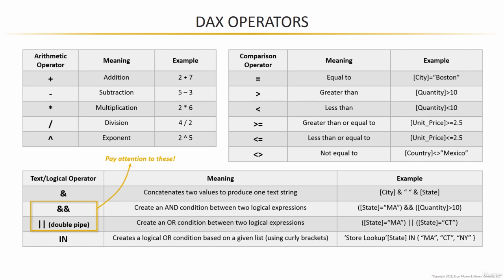From here, we're going to outline some of the most common function categories, then begin adding new calculated fields to our AdventureWorks report.